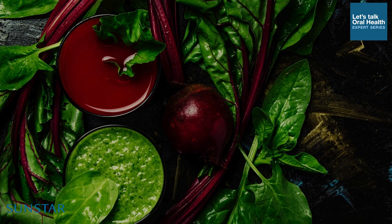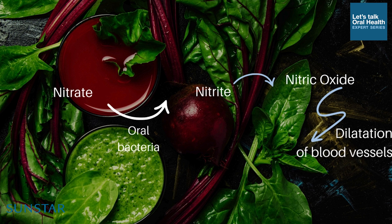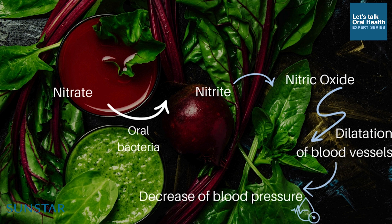An even more interesting example is that oral microbes are very crucial for our general health. For instance, by having in our diet foodstuffs containing nitrate — such as red beets or spinach — these oral bacteria reduce nitrate into nitrite. This nitrite is later reduced in our body to nitric oxide, and nitric oxide contributes to dilatation of blood vessels. So when your blood vessels are relaxed, your blood pressure goes down. In this way, our oral microbes contribute to a healthy cardiovascular system.